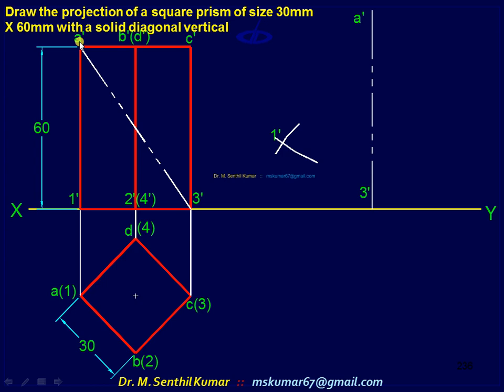Similarly here, with A dash as center, A 1 dash as radius, draw this arc. Then with 3 dash as center, 3 dash 1 dash as radius, cut arc. Thereby you can get and transfer the point 1 dash. Follow the same thing for the C dash also.